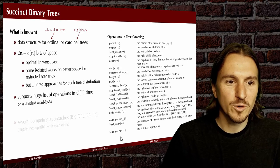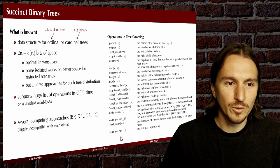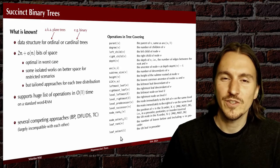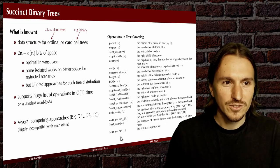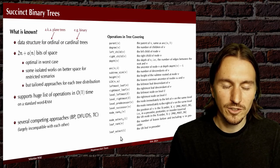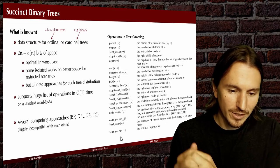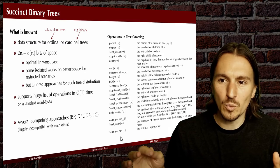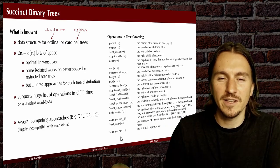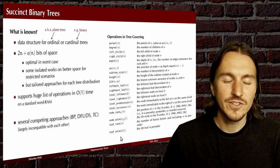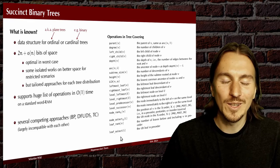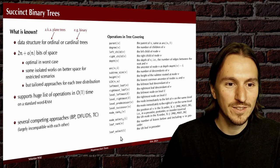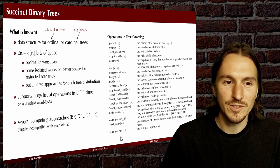All of these have been worked out for several competing approaches to represent the tree. Succinct binary trees usually work by representing the tree in a certain way and then adding indices on top that only take little-o of n extra space to support these operations.